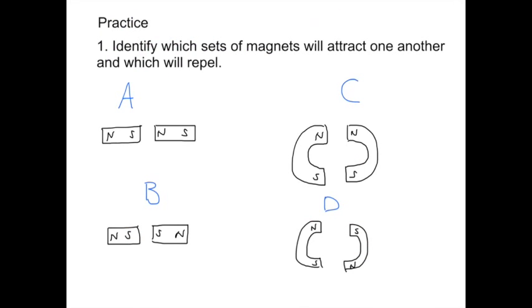Now let's look at some practice problems. Number one, identify which sets of magnets will attract one another and which will repel. So I explained previously that magnets with like poles will always repel, whereas opposite poles will attract. So that would mean that we need a north pole and a south pole next to one another in order for the magnets to attract.